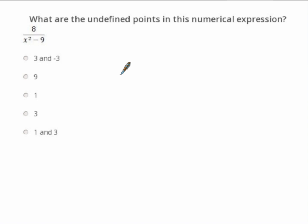All right here's the second one. What are the undefined points in this numerical expression? So we've got the 8 we're just going to completely ignore that 8 in the numerator. What we want is this x squared minus 9. So hopefully you can see if we can get 9 minus 9 that equals 0. So what we need is this to be equal to 9. So there's a couple ways we could do if we have x squared equals 9.